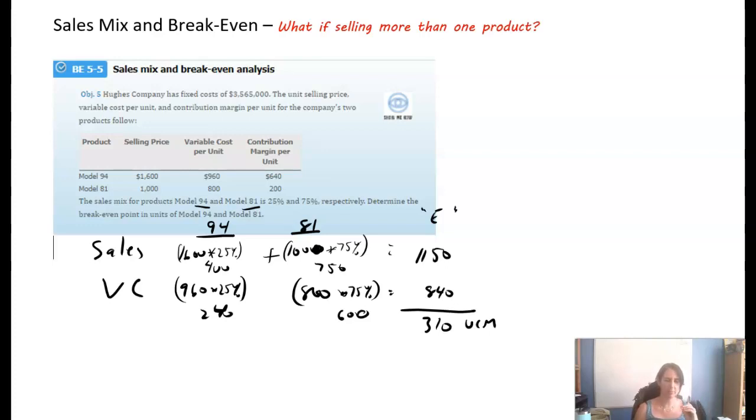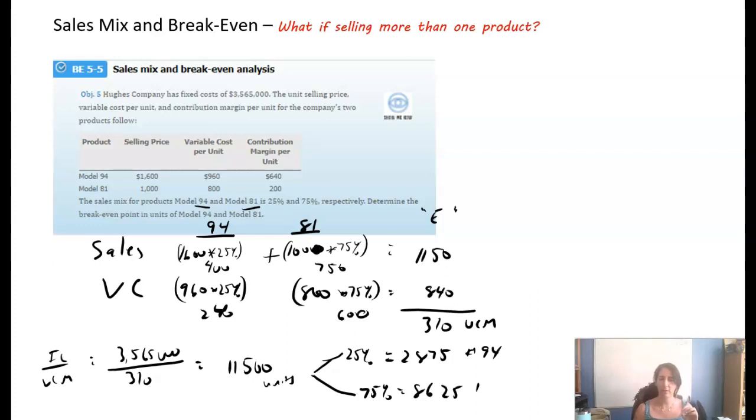Now that we've kind of brought them together, we're going to do our breakeven analysis. Breakeven is fixed costs over unit contribution margin. So our fixed costs are $35,650 divided by $310, my unit contribution margin, which is 11,500 units. But units of what? That's not very helpful. We have to break it back apart again into my 25 and 75%. We have to break that 11,500 into 94 and 81, the products. So we're going to multiply that 11,500 times 25% and we find out that we need 2,875 of number 94 and we need 8,625 of product 81 in order to breakeven. So that one is a little bit funky, I know.